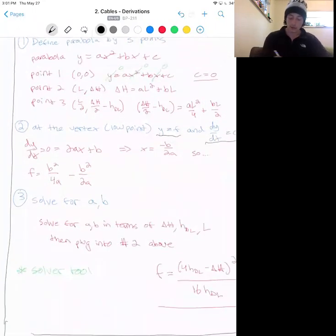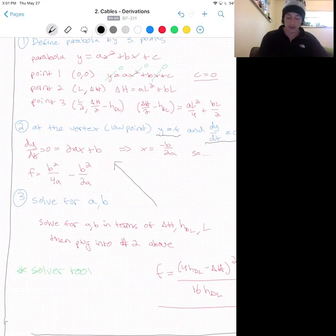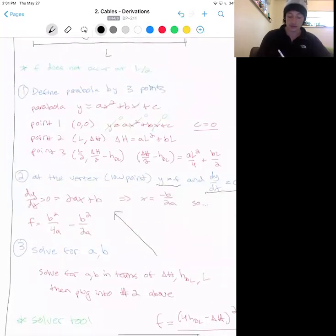So we plug, we solve for a and b in terms of delta H, HDL, and L, then plug into number two, which is the step here above, in order to then solve for f. In order to get those delta H design load, or dead load sag, and L, in terms of a and b, we'll use those equations from step one here for point one, two, and three in order to solve for that.